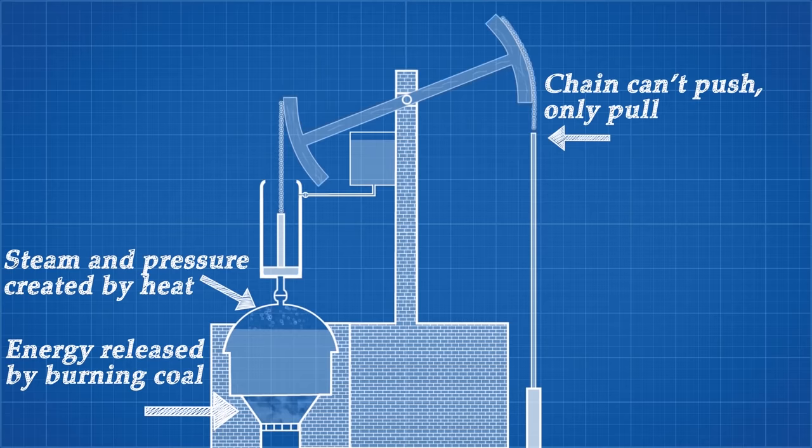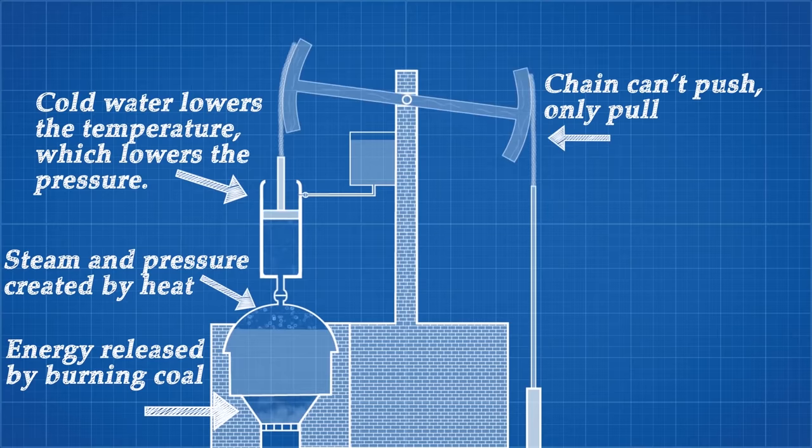The power stroke occurs when cold water is sprayed into the cylinder. This lowers the temperature, causing the pressure to drop. Atmospheric pressure now pushes the piston back down.